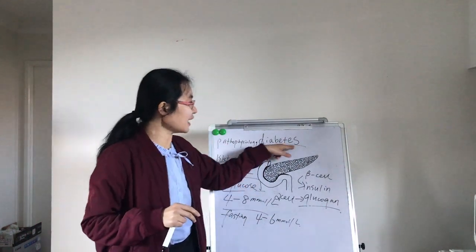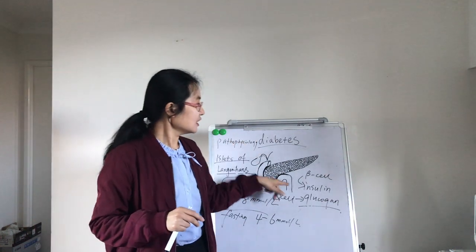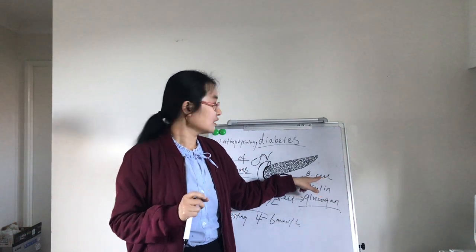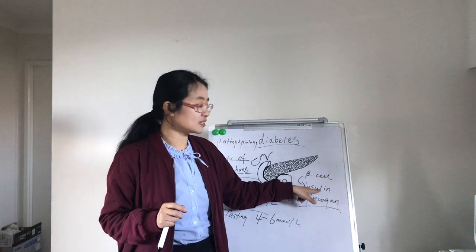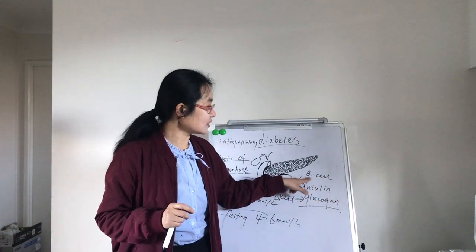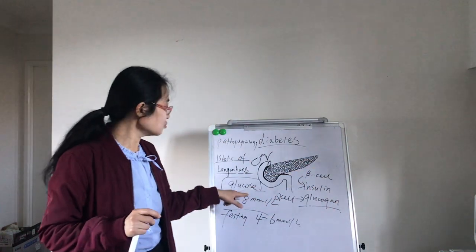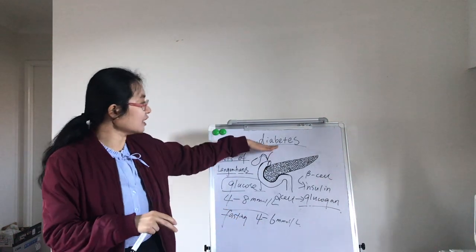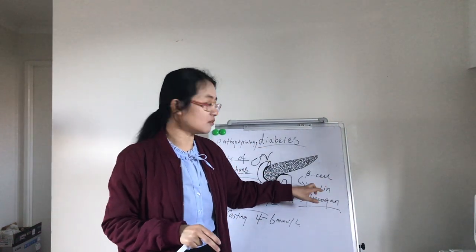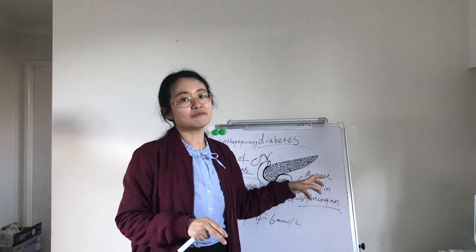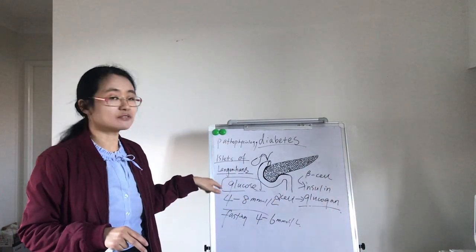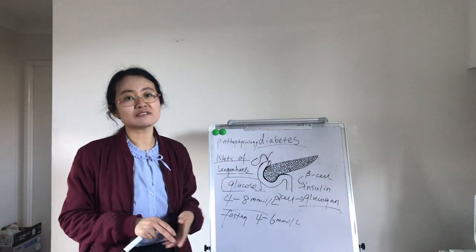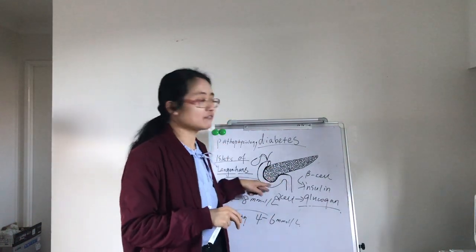For diabetic patients, the beta cells of the pancreas don't work properly, so they cannot produce enough insulin to control glucose. Therefore, glucose always stays at a higher amount. Diabetes means either no insulin or not enough insulin is produced for the body to reduce the glucose level. The main symptom of a diabetic patient is a high level of glucose above the normal range.